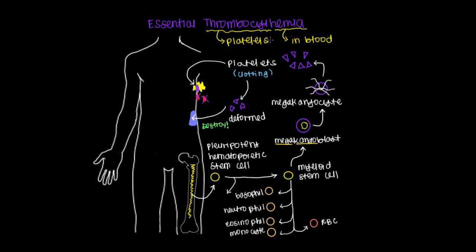The problem with essential thrombocytemia is a defect involving the JAK2 kinase protein, a regulator that determines whether it's an appropriate time for a cell to divide and mature. In ET, this protein is stuck in the 'on' mode, which keeps telling megakaryoblasts to keep dividing and keep making platelets. This results in a large excess of platelets, which causes a variety of signs and symptoms.